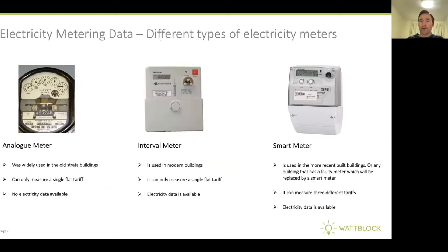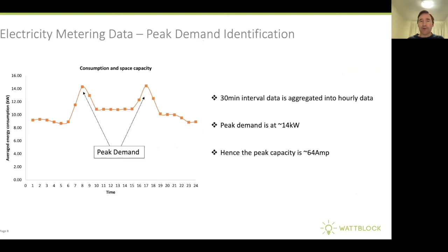On electricity metering data, we've got three different types of electricity meters. On the left is the analog meter — the oldest, which is getting phased out. In the middle are interval meters, quite common in our strata buildings. And on the right are smart meters, what we should all be working towards. Electricity metering data allows you to identify peak demand. If we graph electricity metering data coming in at 30-minute intervals, you can see on this graph there are two peak demand points at 14 kilowatts, appearing at 8am and just after 5pm. We can tell the peak capacity is 64 amps.